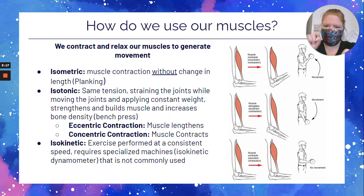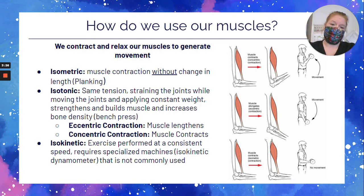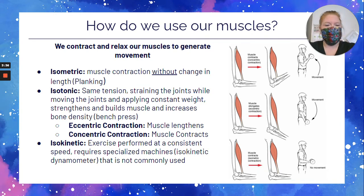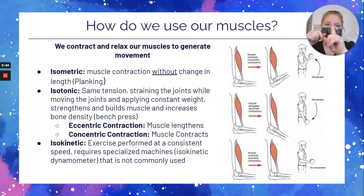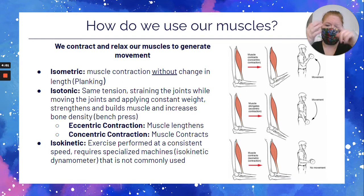Concentric contraction is the muscle contracting, and the eccentric part is the muscle lengthening. As for isokinetic — unless you become an Olympic athlete or something, you're not going to be using this specialized machine, so it's not something that's commonly used. Aside from knowing the difference between isometric, isotonic, and isokinetic, that's really the end of what you need to know about isokinetic. The focus is isometric versus plyometric and isometric versus isotonic, and then remember the two types of isotonic: eccentric and concentric.